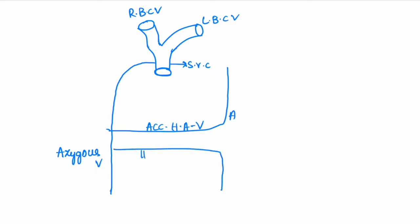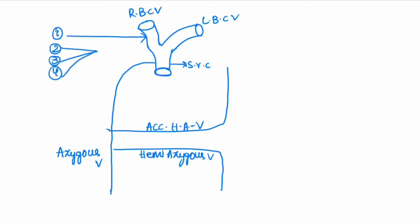On the left side we have the accessory hemiazygous vein and the hemiazygous vein. On the right side, the first intercostal vein drains into the brachiocephalic vein. The second, third, and fourth intercostal veins combine together to form the superior intercostal vein, which drains into the azygous vein. All the remaining intercostal veins on the right side also drain into the azygous vein.